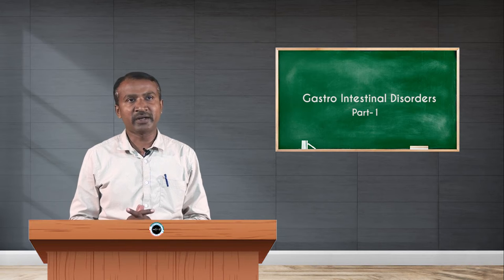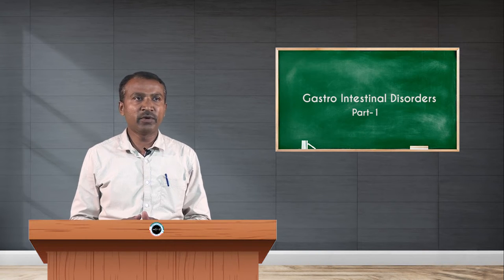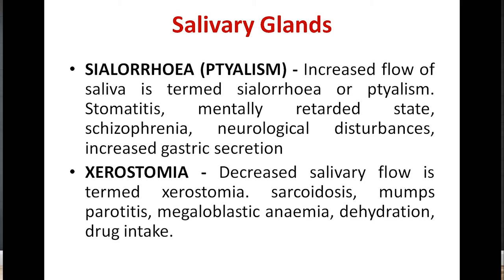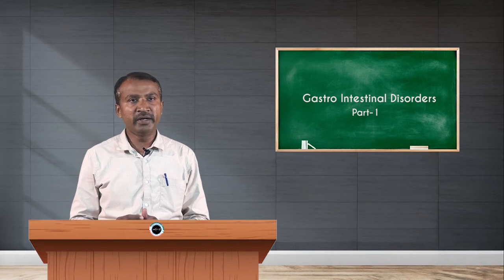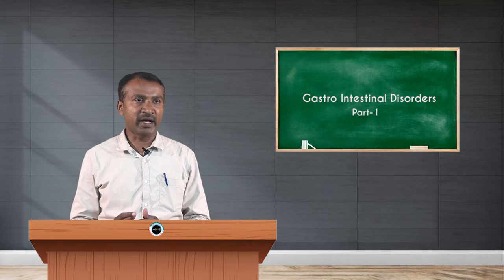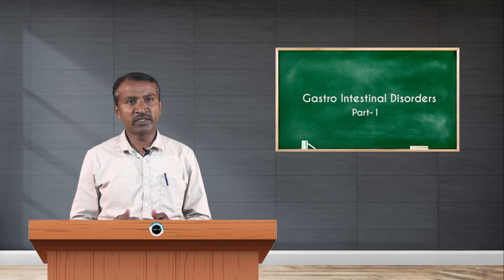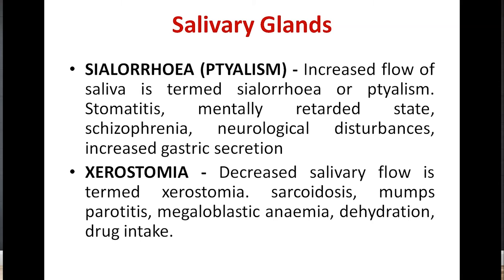There is a term called cellurea or sialism, which refers to increased flow of saliva. The diseases in which we see increased saliva production are stomatitis, mentally retarded status, schizophrenia, psychological disorders, neurological disturbances, and increased gastric secretion. Similarly, there is another term called xerostomia, which refers to decreased salivary flow.